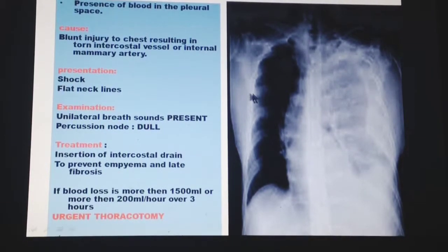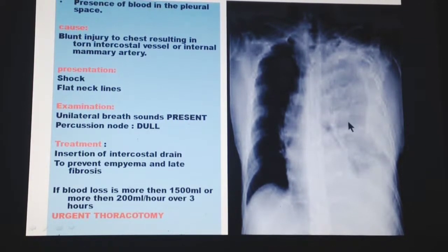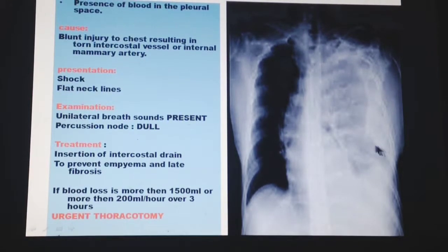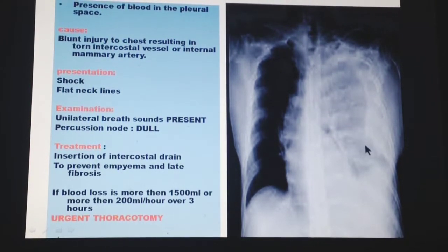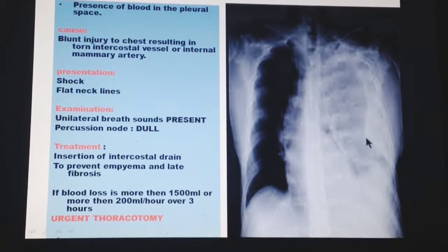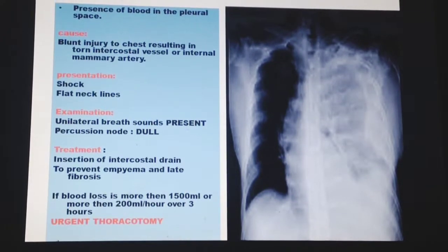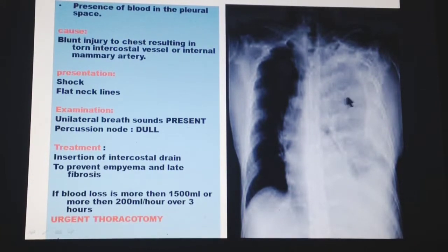On examination, breath sounds are unilaterally absent on the affected side, and percussion reveals dullness indicating a large presence of fluid. Treatment involves inserting an intercostal drain to remove the fluid and prevent empyema — infection that can develop from stasis of blood in the pleural space — and subsequent fibrosis. If blood loss exceeds 1500 ml, or is more than 200 ml per hour over three hours, an urgent thoracotomy is required to identify and surgically stop the bleeding vessel.